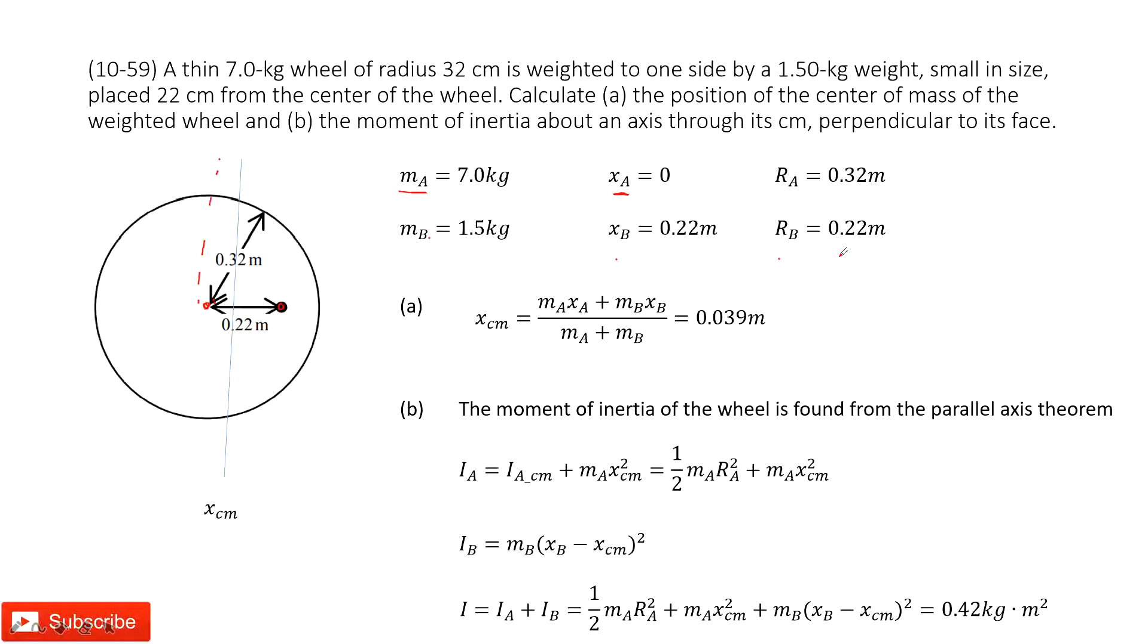The first one, we need to find the position of the center of mass. So for center of mass, we can consider we have MA times XA plus MB times XB, divided by MA plus MB. This is the equation in our textbook. Now input the known quantities.